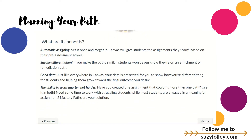What are the benefits of a mastery path? First of all, you set it once and you forget it. There is some work on the back end, just like anything you make in Canvas, but students get the assignments automatically that they earn based on their pre-assessment scores. Number two, it's sneaky differentiation. If your paths are similar enough and take about the same amount of time — which good differentiation should — students don't even know they're on a certain path. Number three, you get really good data. You start to see who's on what path, and you get to work smarter, not harder.